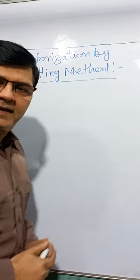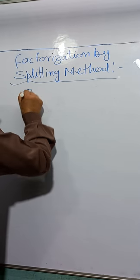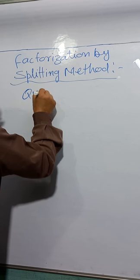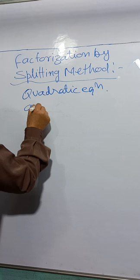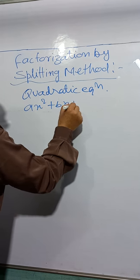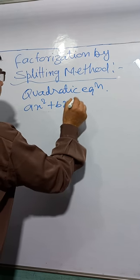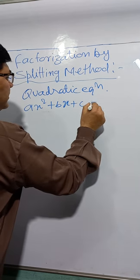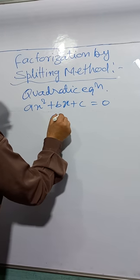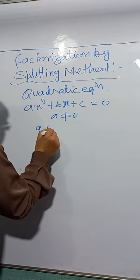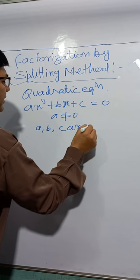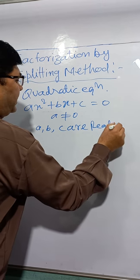Factorization by splitting method for quadratic equations. The standard form is ax² + bx + c = 0, where a does not equal 0, and a, b, c are real numbers.